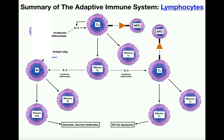These lymphocytes only become activated once we have antigen presentation. Assuming you understand what an antigen is and how antigen presentation works, the first cell that becomes activated is what's called a helper T cell, abbreviated as T with a subscript H.